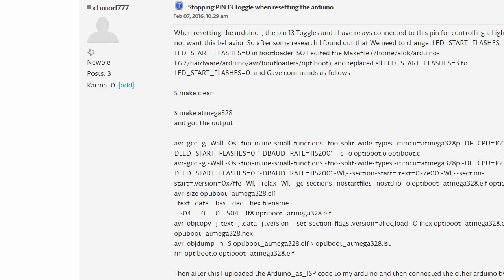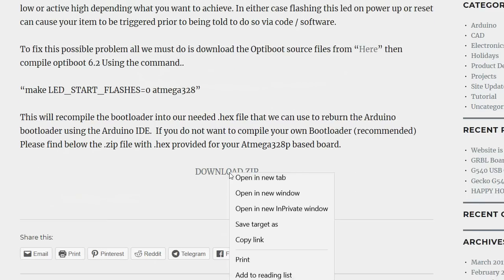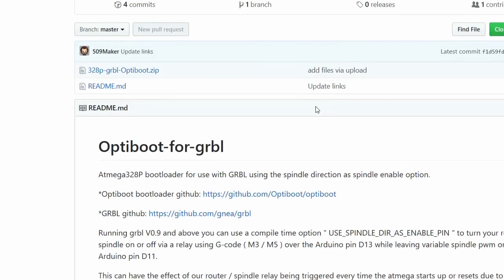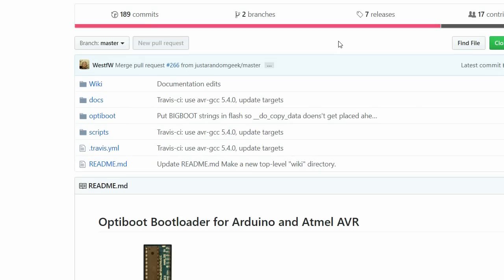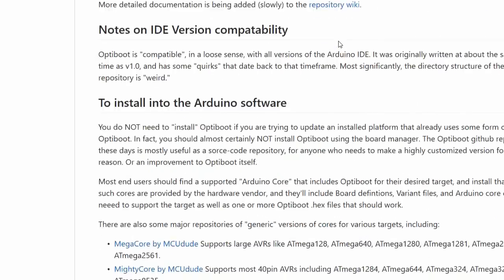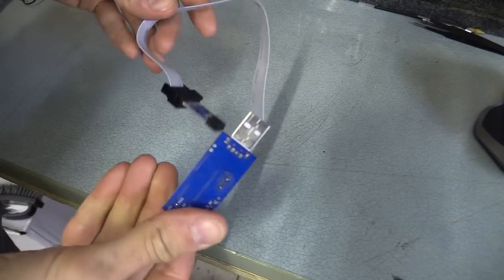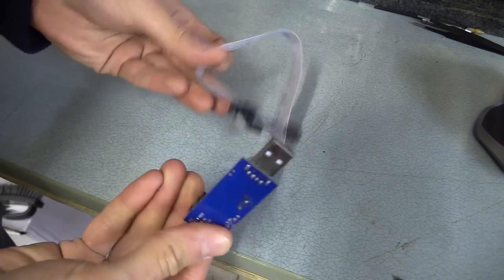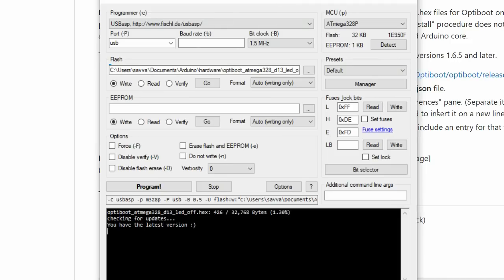To fix this, the article suggests downloading the optiboot source file from github and compiling the bootloader making sure the line or lines led_start_flashes equals zero and not three which it would normally be set to. There also happen to be a direct link to an already compiled hex file, so I use this thing here, a USB ASP device along with a piece of software called AVRdudes to burn that hex file onto the controller's arduino.